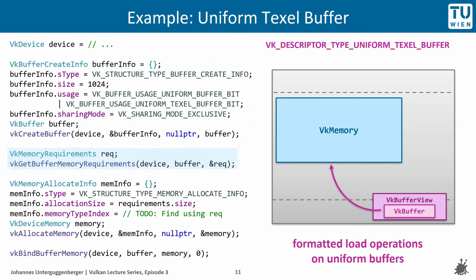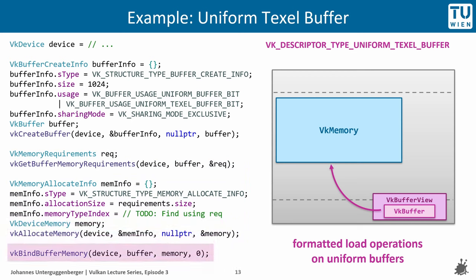The size stated in the buffer's config struct contributes to dictating some memory requirements, which we must retrieve. Based on them, we can populate a VkMemoryAllocateInfo struct instance with the required allocation size and select the right type of memory for our purpose. The vkAllocateMemory function then allocates a potentially large chunk of GPU memory. It is also important to bind VkBuffer and VkMemory together, which is achieved with the function vkBindBufferMemory.